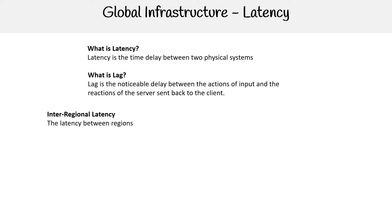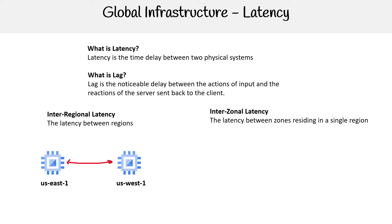We have inter-regional latency — this is latency between two regions. And then we have inter-zonal latency — this is latency between zones residing in a single region.